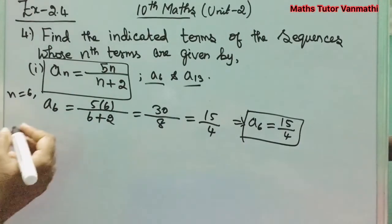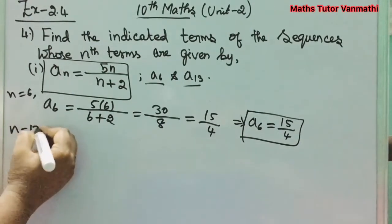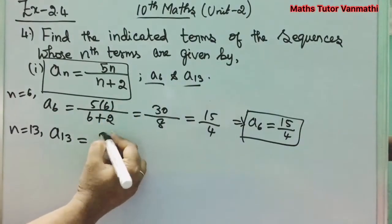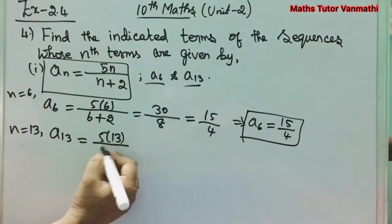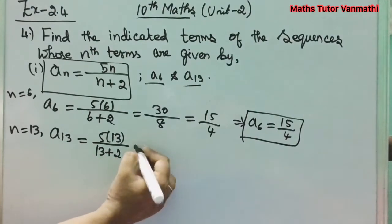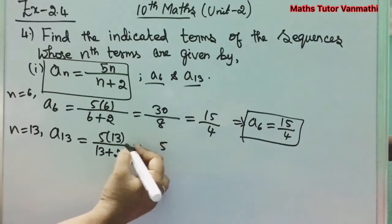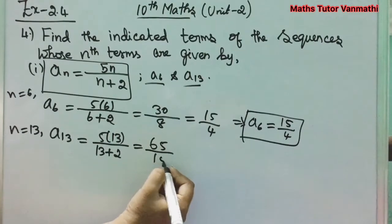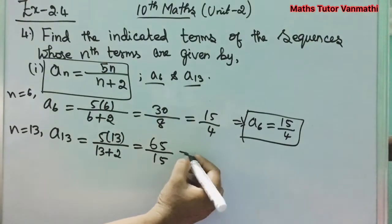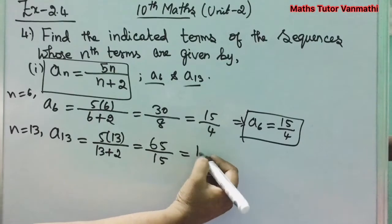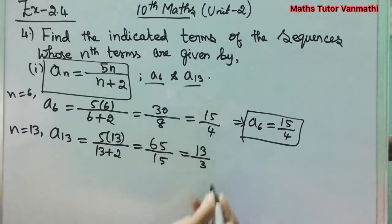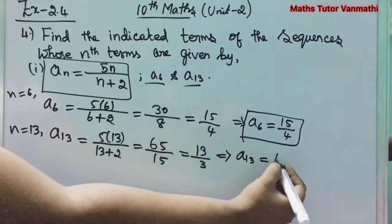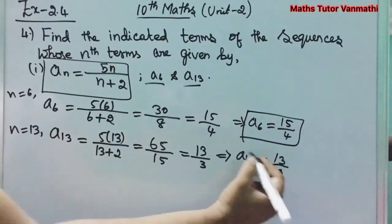For n = 13: a_13 = 5×13 / (13+2) = 65/15. Simplifying: 65/15 = 13/3. So a_13 = 13/3.